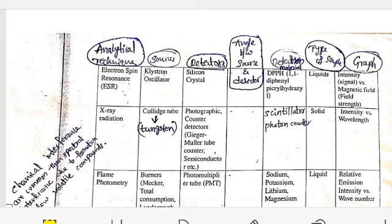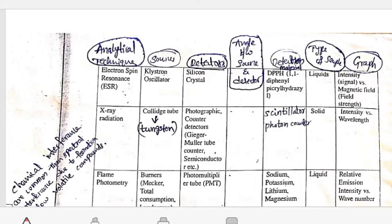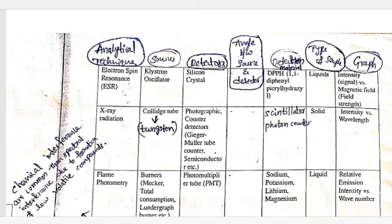Up to now we discussed UV, IR, NMR, and mass spectroscopy - these four are very important for GPAT orientation. Very few times they will ask for other areas, but for your information I am giving this tabular column which includes analytical technique, source, detectors, angle between source and detector, detector materials, and type of samples used.